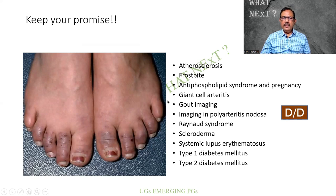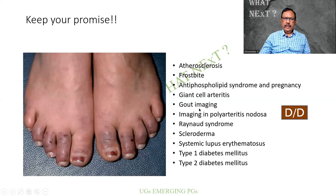What can be the differential diagnosis in this particular picture? It can be atherosclerosis, frostbite, antiphospholipid syndrome in pregnancy, giant cell arteritis, gout, polyarthritis, atherosclerosis, Raynaud's phenomenon, scleroderma, SLE, or diabetes mellitus. So all these should be kept in mind.